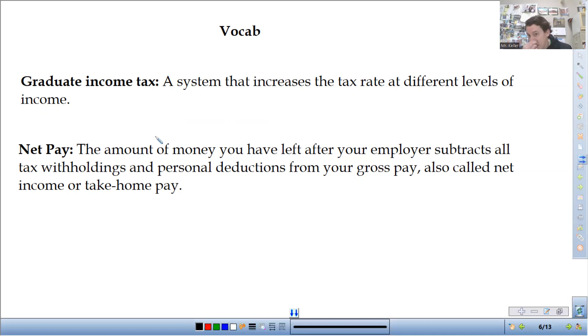So your gross pay, which we talked about last chapter, is just all the money that you're paid. And then from your gross pay, they take out taxes and other deductions, and then what's left over is called your net pay. That's all it is to that.